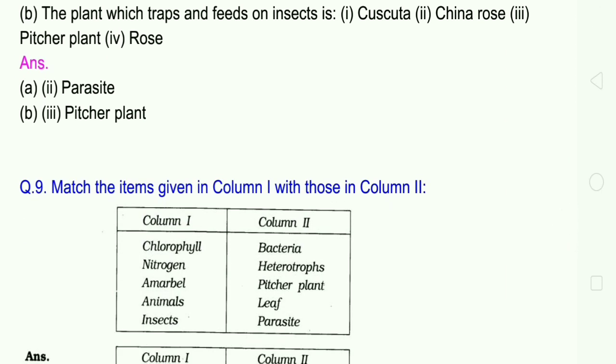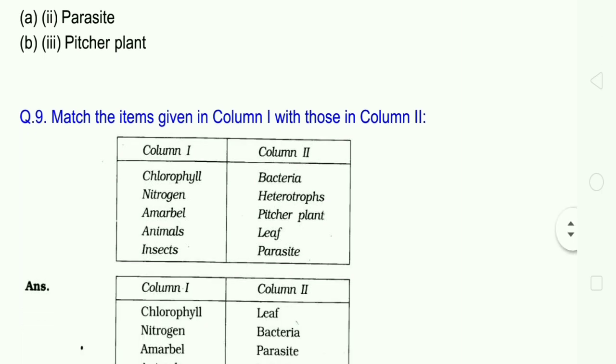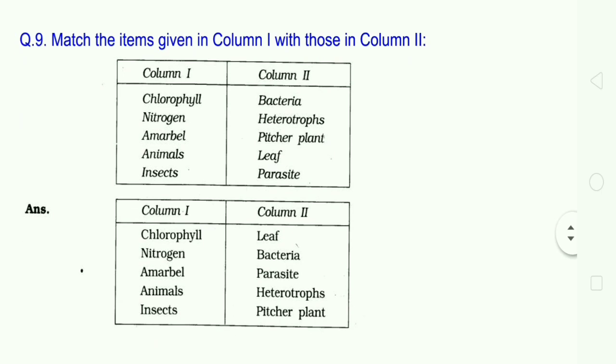Question 9: Match the items given in column 1 with those in column 2. Column 1: Chlorophyll, nitrogen, amabel, animals, insects. Column 2: Bacteria, heterotrophs, pitcher plant, leaves, parasite. Answer: Chlorophyll - leaves, nitrogen - bacteria, amabel - parasite, animals - heterotrophs, insects - pitcher plant.